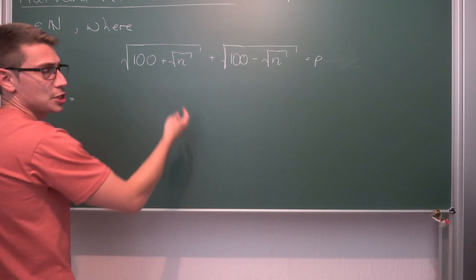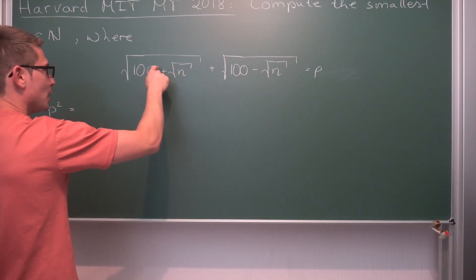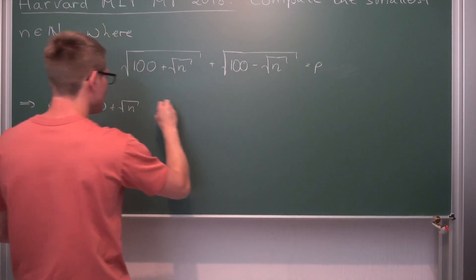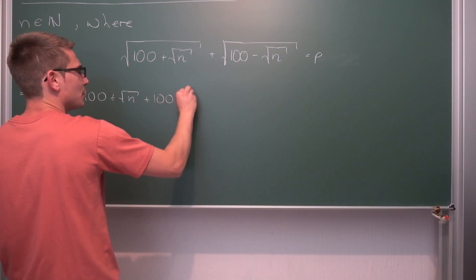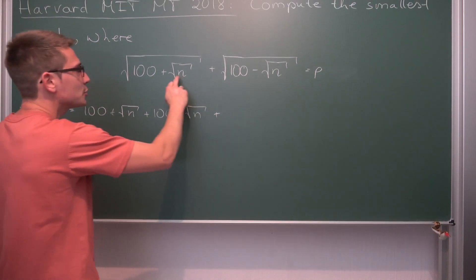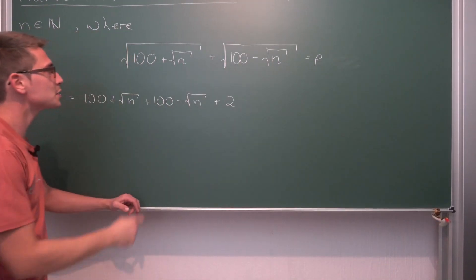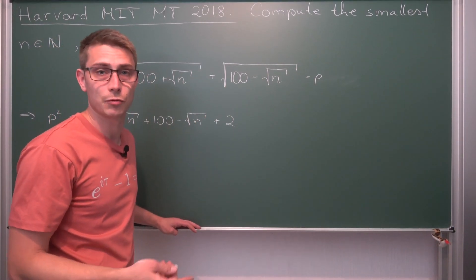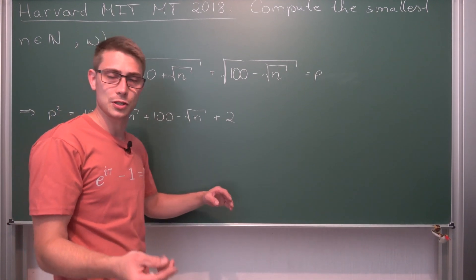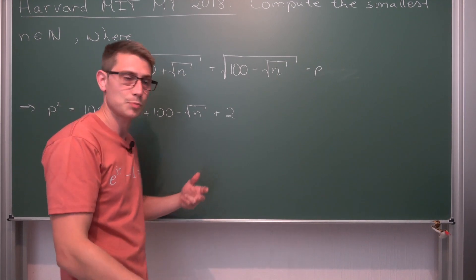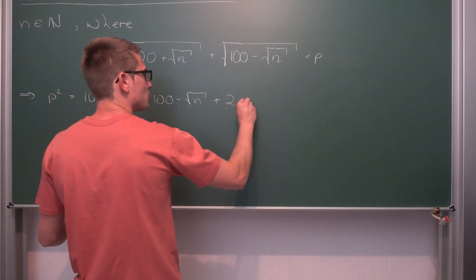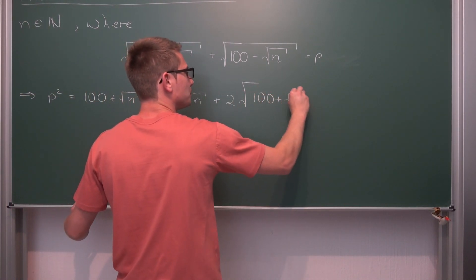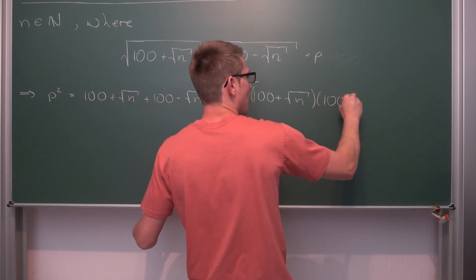If we square both sides, we get p squared. This is just a binomial formula: we square the first part getting 100 plus √n, then add the square of the second part, 100 minus √n, and then add two times those multiplied together — so two times √(100+√n) · √(100−√n). If both arguments are positive, we can write that as the square root of (100+√n)(100−√n).